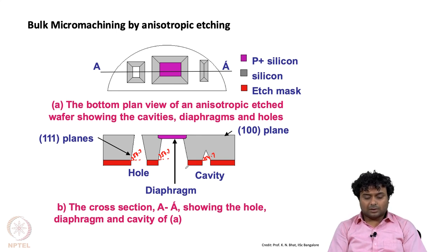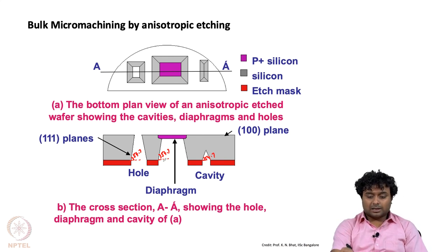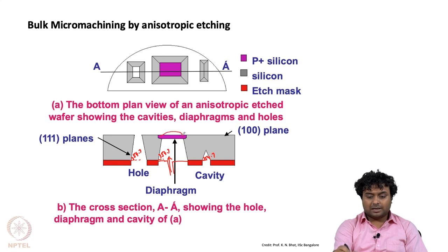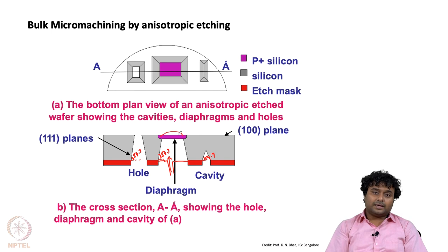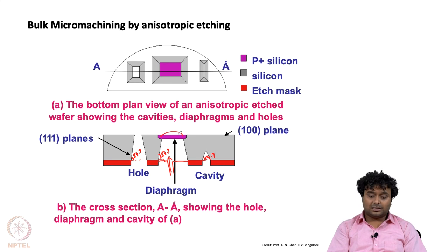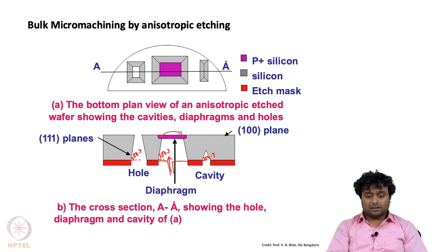One important application of the membrane is pressure sensing. A pressure port is connected to the membrane opening, and when air pressure is applied, the membrane bends. The deflection of the membrane can be measured optically or electrically to determine how much pressure is applied in the chamber being measured.